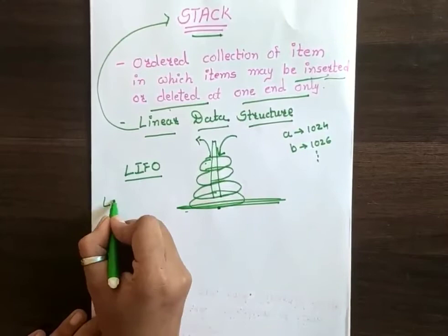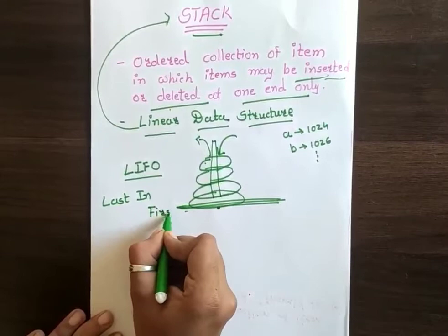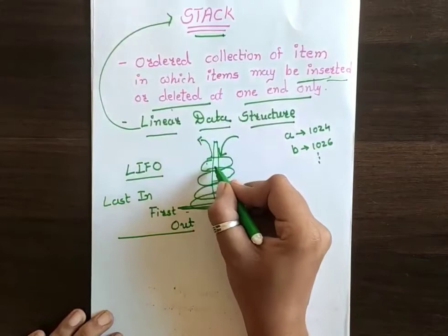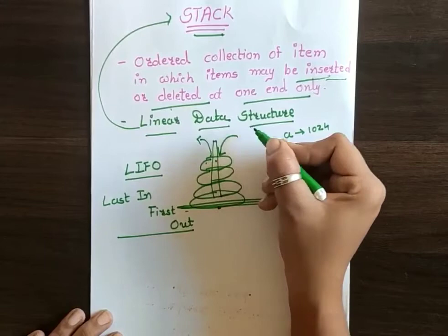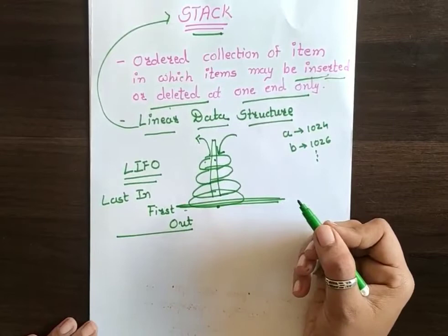LIFO means Last In First Out. That means whichever item is inserted last, that would be the first one to be removed. So that is LIFO data structure, and in stack we follow LIFO.